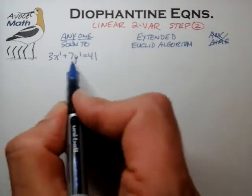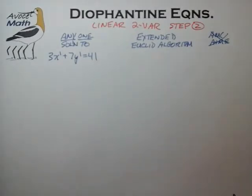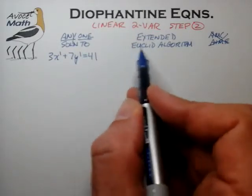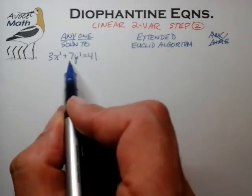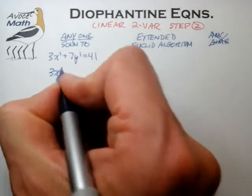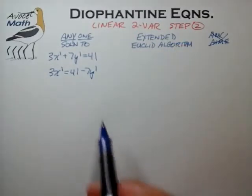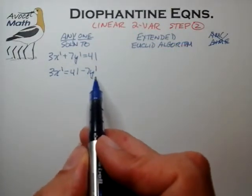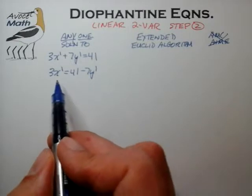For our purposes we're going to be dealing with Diophantine equations where the coefficients are in a reasonable range — possibly one-digit numbers or at most a low two-digit number. So we can use a more efficient method to find solutions without needing the full Extended Euclidean Algorithm. The method we'll use is to take the term with the largest coefficient, 7, and bring it to the other side, forming 3x' = 41 − 7y'. Then we do a check-and-guess process, trying different values for y' to see if the difference is a multiple of 3.